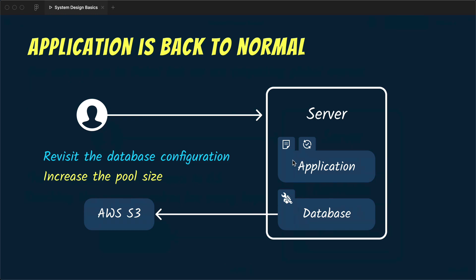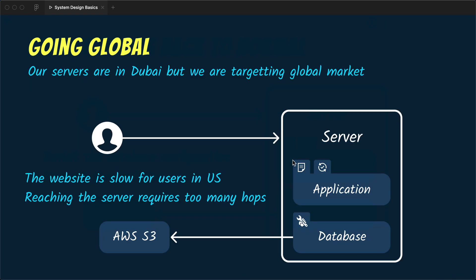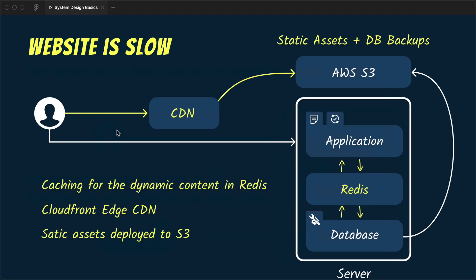Our application is working fine but we now have plans to go global. Previously we targeted only people in Dubai, but now we want to target Europe and the US as well. We run a marketing campaign and soon get complaints that the website is slow. The issue is that people in the US are far from our servers and requests have to travel through several hops to reach the server and return a response. To fix this we decide to use client-side and server-side caching and change our deployment strategy — building all static assets and putting them in S3 with a CDN in front.